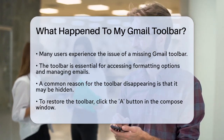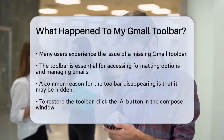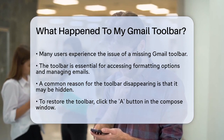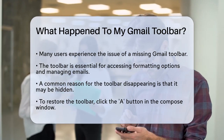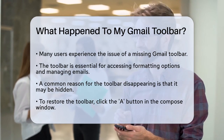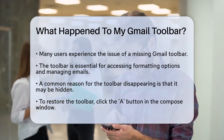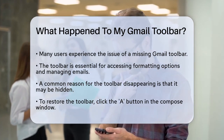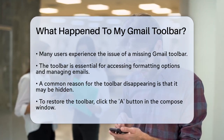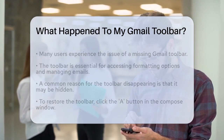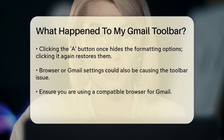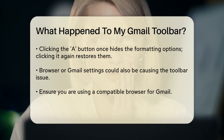First, let's address the most common reason for this issue. Sometimes the toolbar might be hidden and you just need to bring it back. In Gmail, you can restore the toolbar by clicking on the A button in the Compose window. If you click on this A button once, it will hide the formatting options, but clicking it again will restore the Gmail toolbar, giving you back all the formatting options you need.